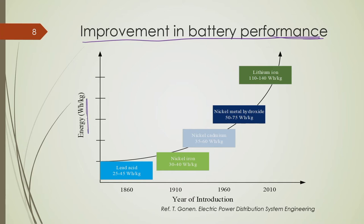This figure shows the improvement and evolution of battery performance over time, with energy density (energy per unit mass) on one axis. Lead acid battery is the oldest, used for at least two centuries. Then came nickel iron, then nickel cadmium, then nickel metal hydride with higher energy density, and finally lithium ion, which has the highest energy density today. Battery technology continues to advance and we are also searching for a superior battery at the cheapest possible cost.